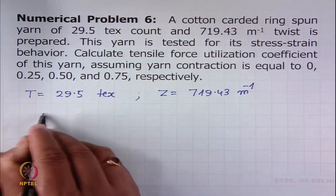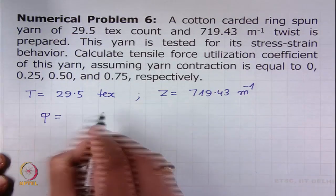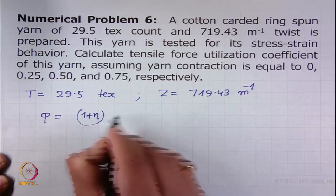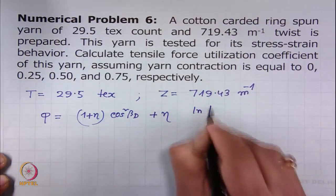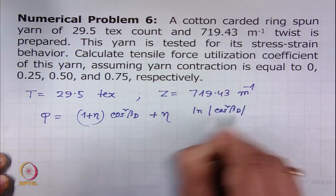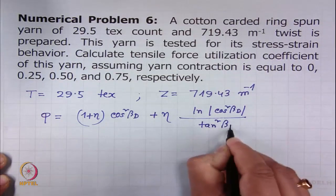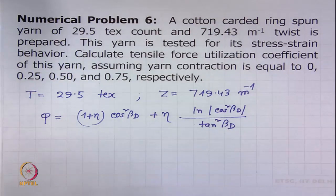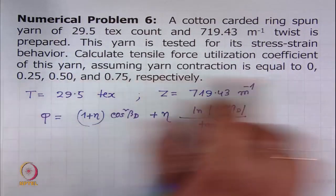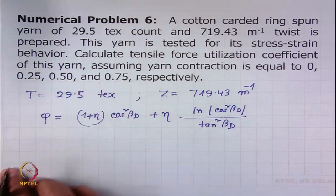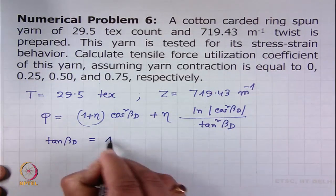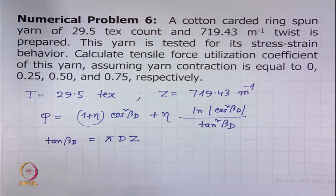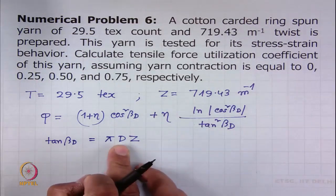We have to basically use this expression: phi, the tensile force utilization coefficient of yarn, equals 1 plus eta cosine beta_d plus eta terms involving beta_d. Given eta of 0, 0.25, 0.5, and 0.75, what is not given is beta_d. Now, tangent of beta_d is equal to pi times d times z. z is given but d is not given.